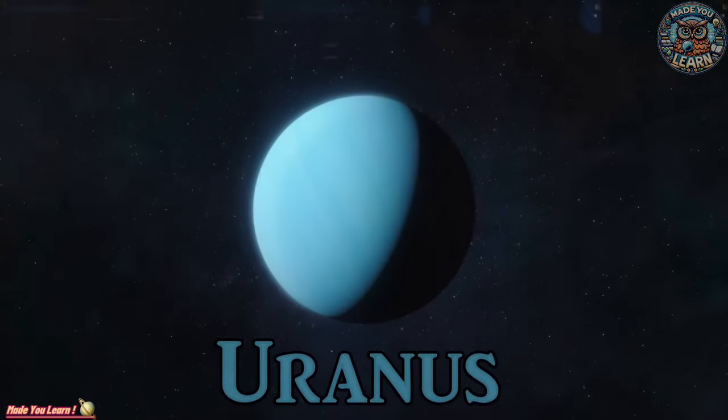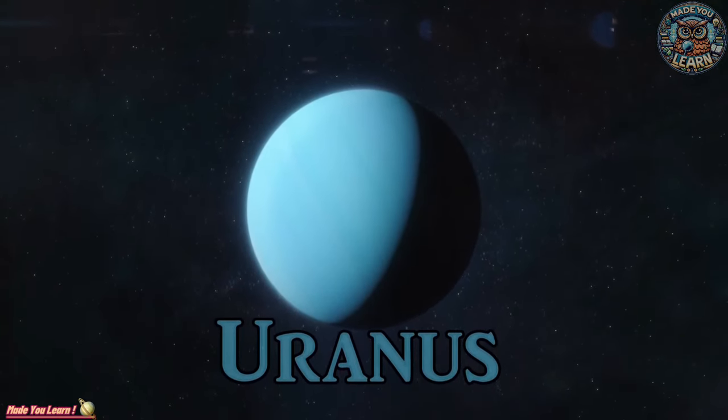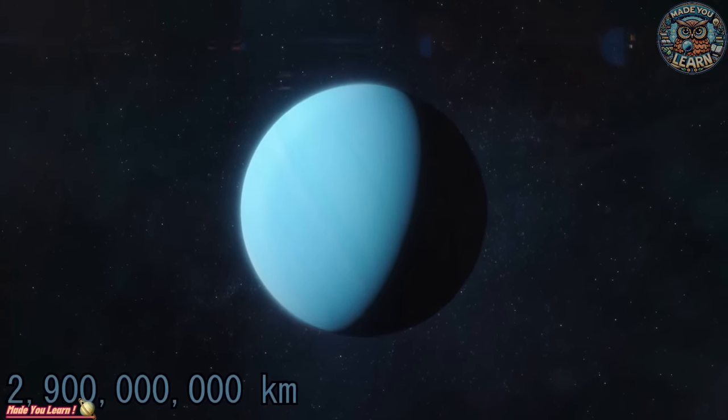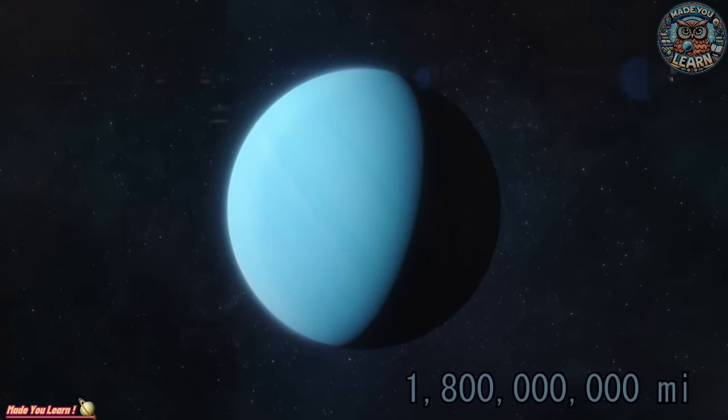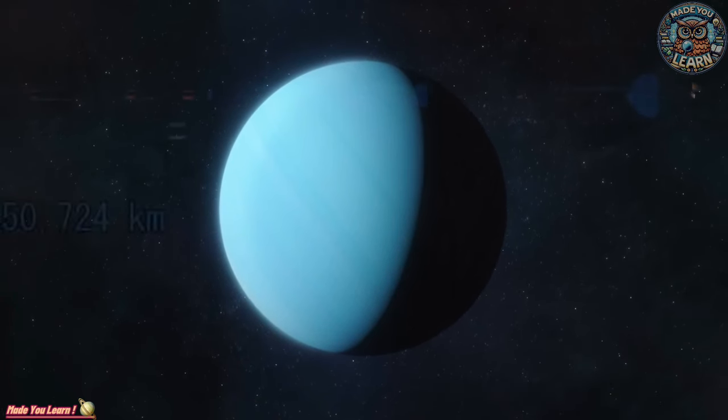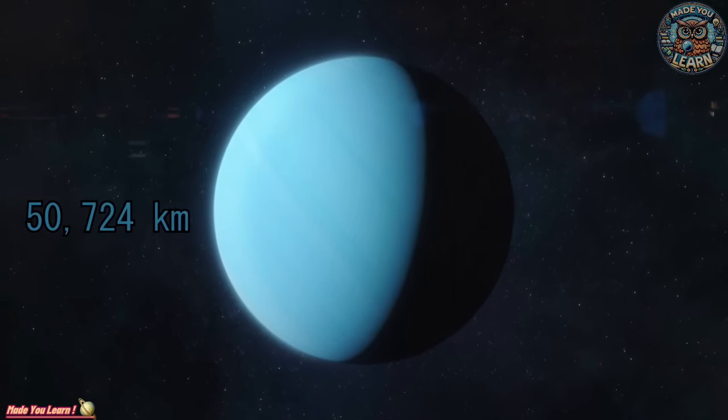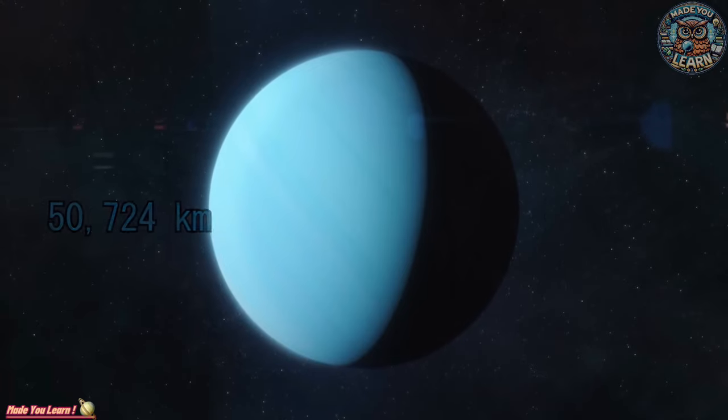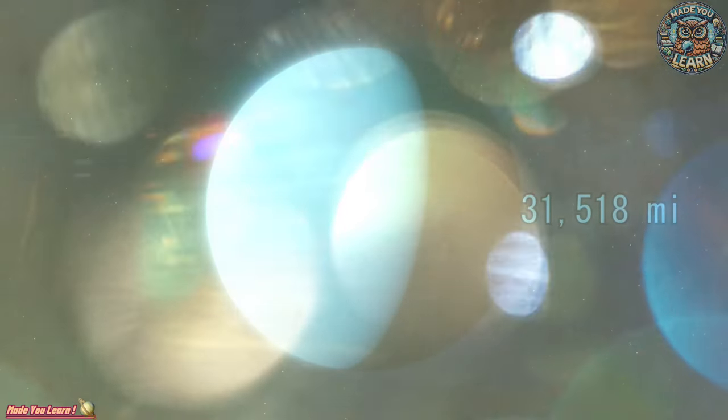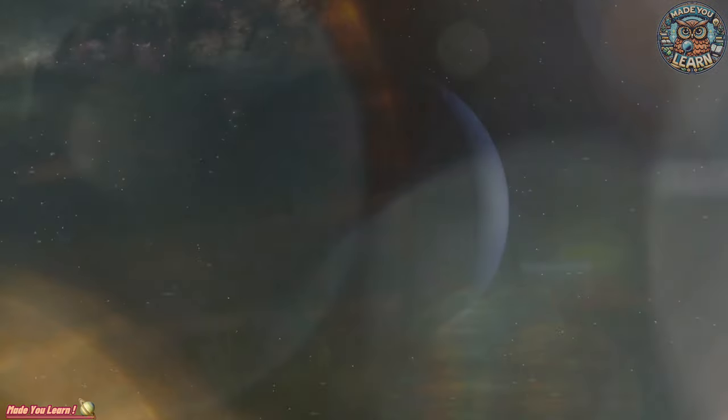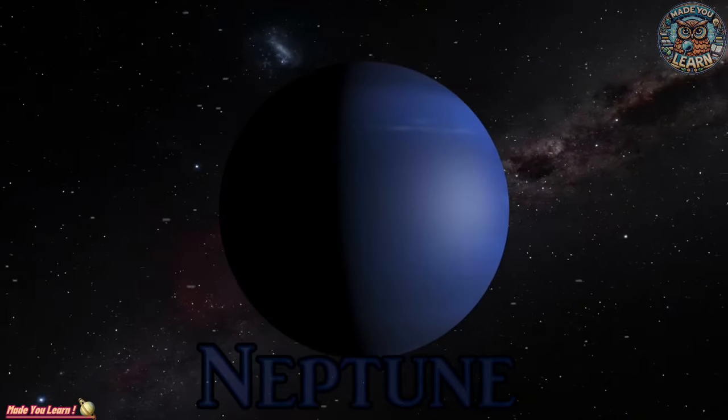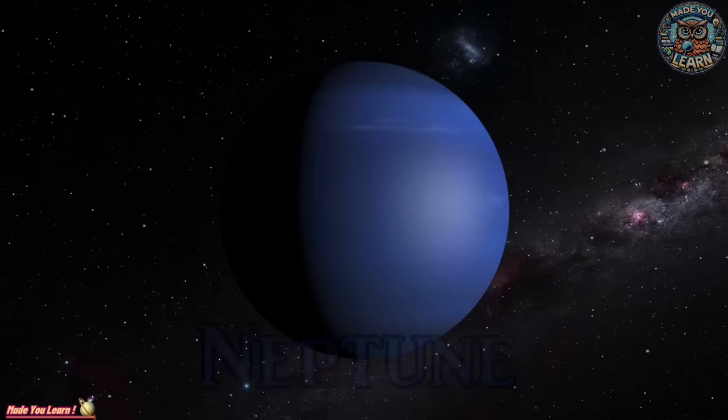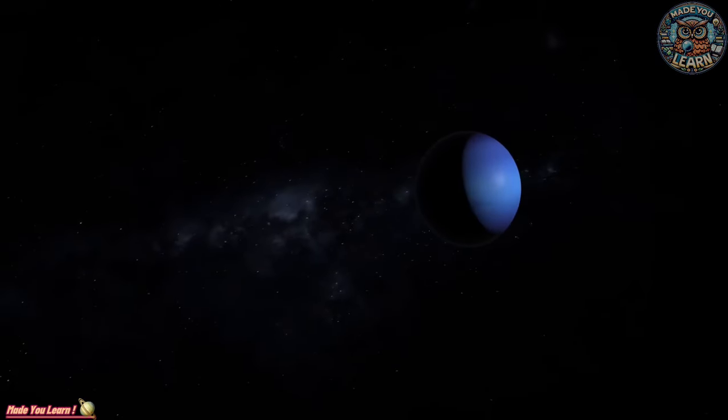Uranus and Neptune, the ice giants, stand out with their rich blue hues, caused by methane in their atmospheres. Uranus, with its peculiar tilt, rotates on its side, leading to extreme seasonal variations. Neptune, though further from the Sun, is a dynamic world with the fastest winds in the solar system.